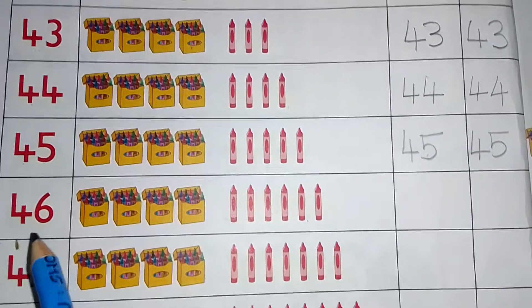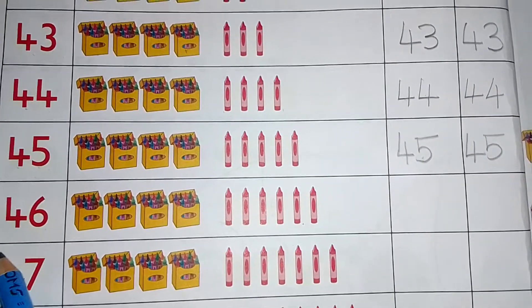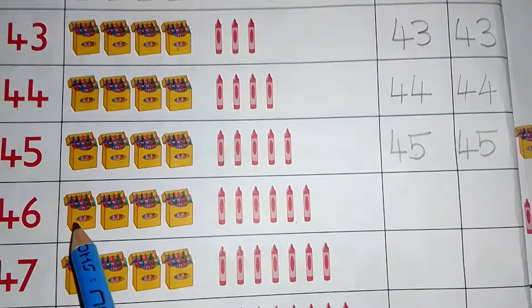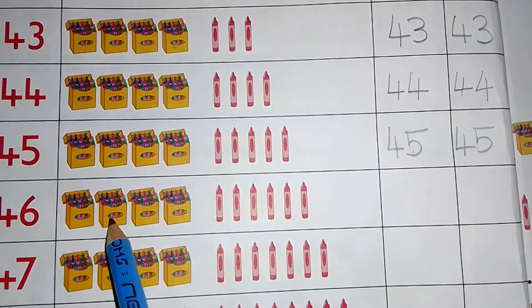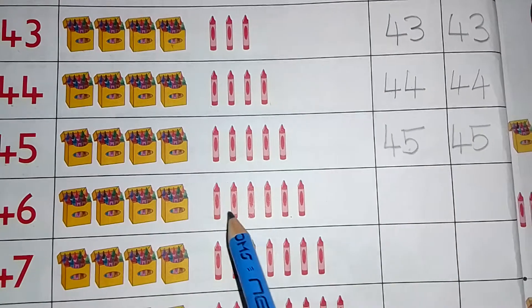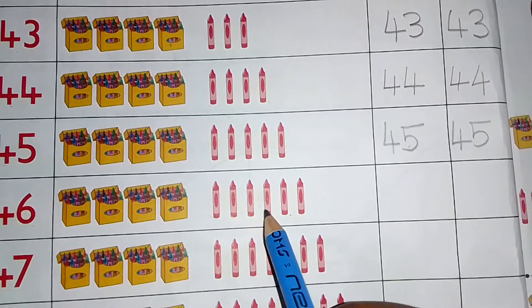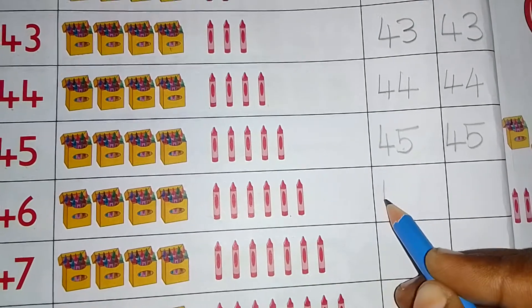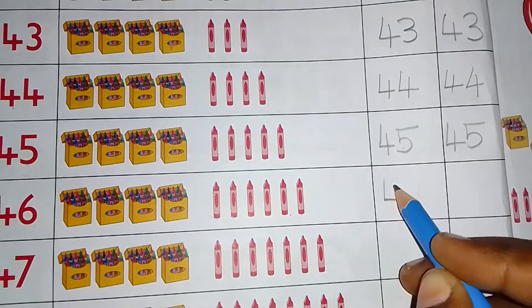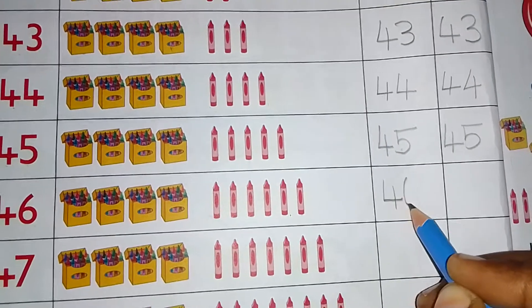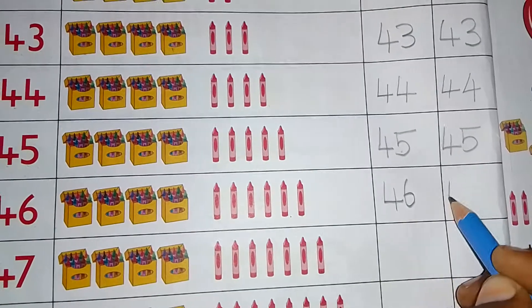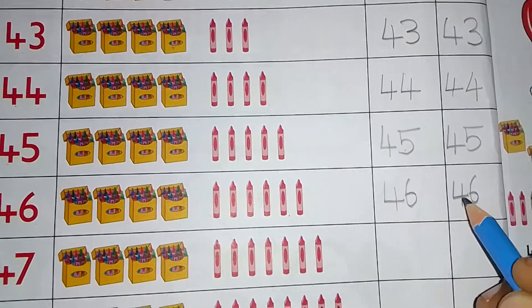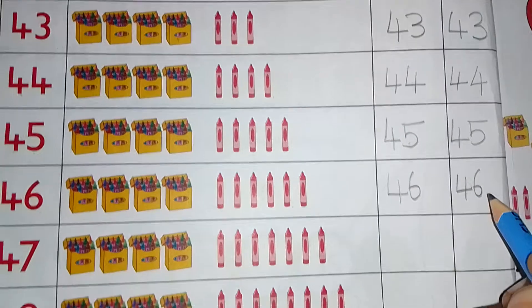Next number 46. 46. 10, 20, 30, 40, 41, 42, 43, 44, 45, 46. We write 46. How to write 46? Write 4, then we write 6. 4, then 6. 4, 6. 46. Okay?